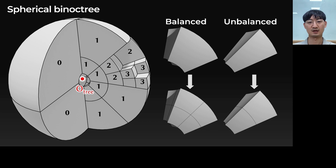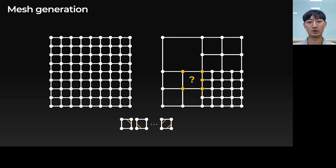Each node of the binoctree is subdivided into eight or two children depending on its shape, hence the name binoctree.